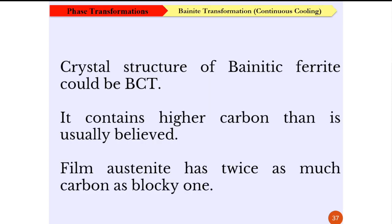The conclusion from this part is that the crystal structure of bainitic ferrite could be BCT under certain circumstances. The carbon concentration of this bainitic ferrite can be higher than usually believed. Further analysis gives the result that film austenite has twice as much carbon as the blocky austenite.